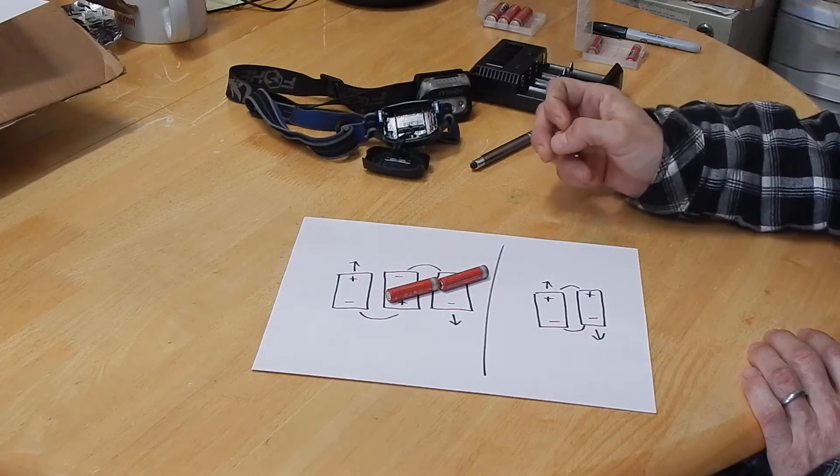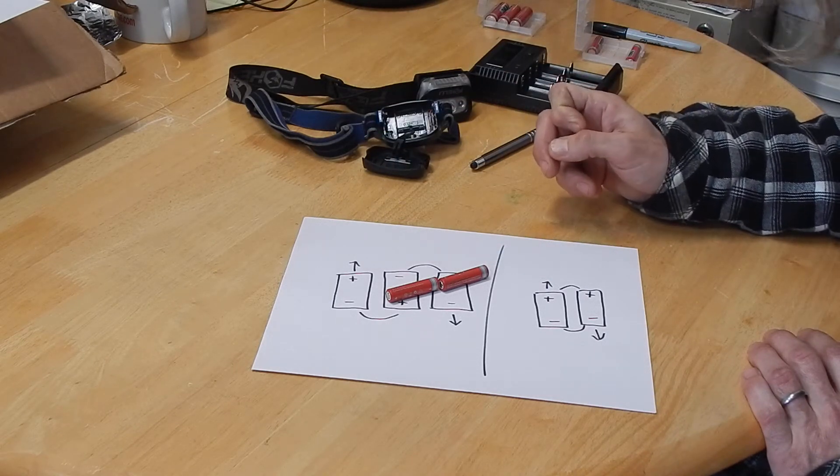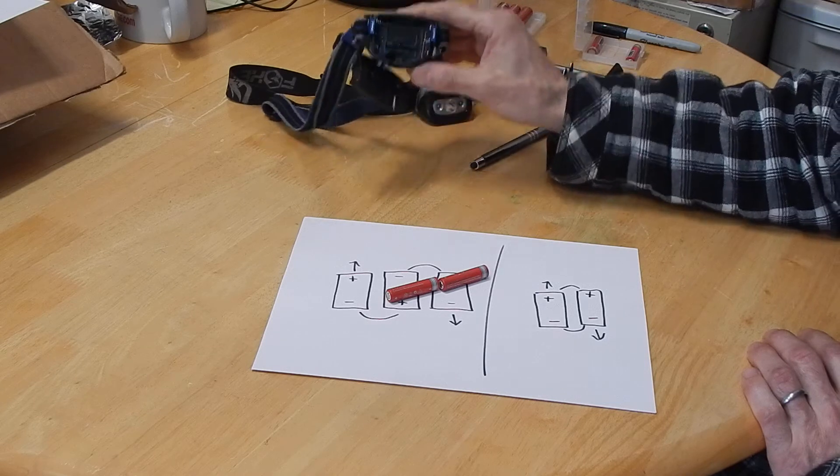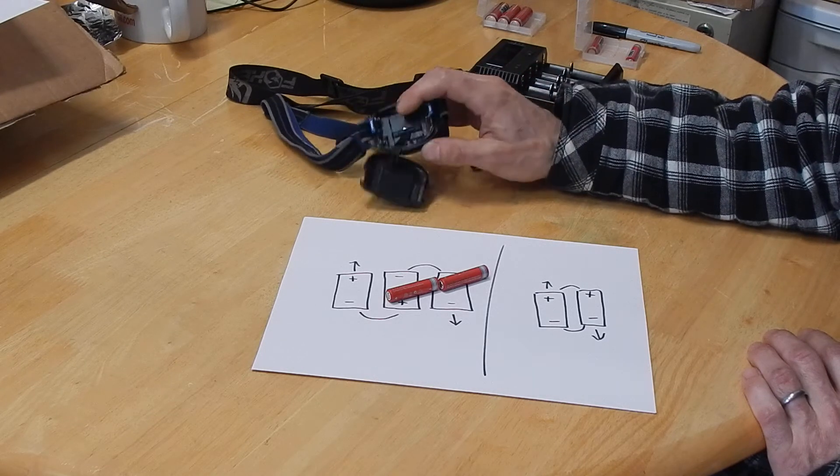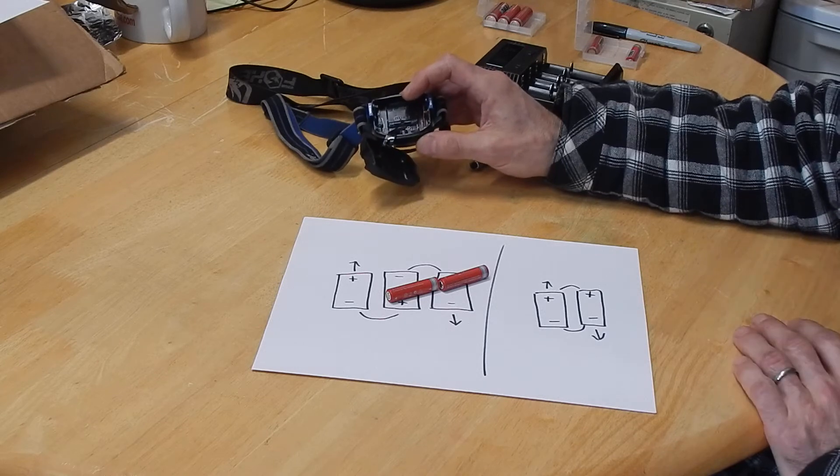In other words, it adds the voltages of all the batteries together, which is how it comes with the AAAs. So instead of 1.5 volts, you have three of them. You end up with four and a half volts.